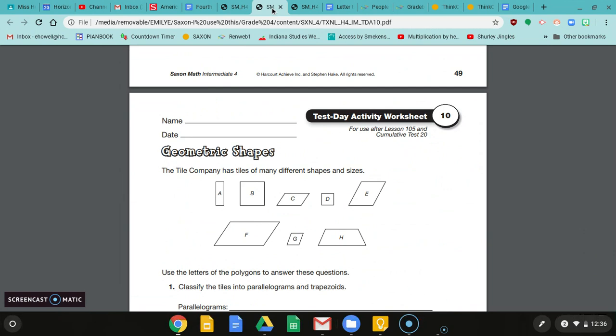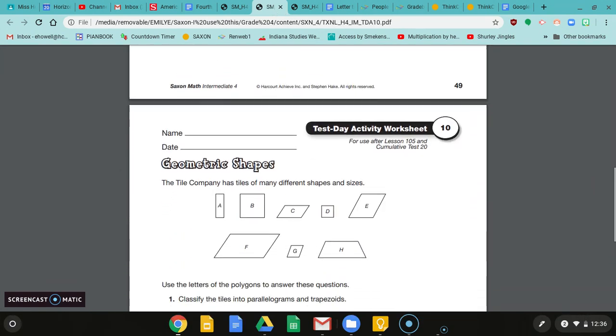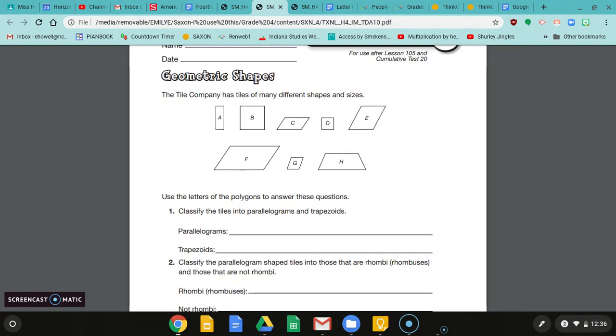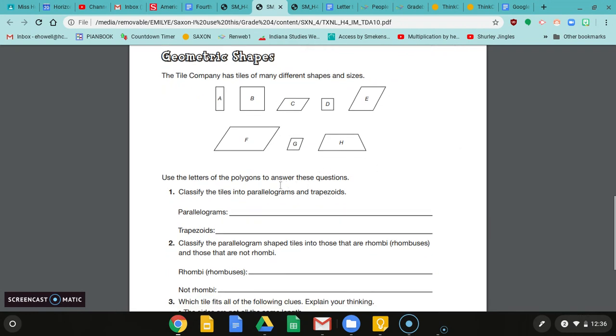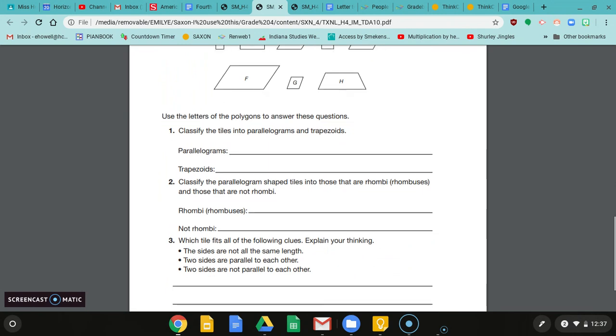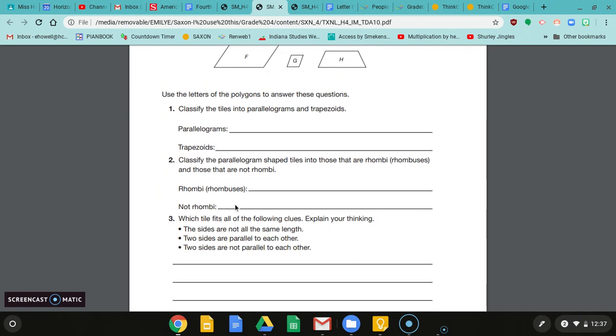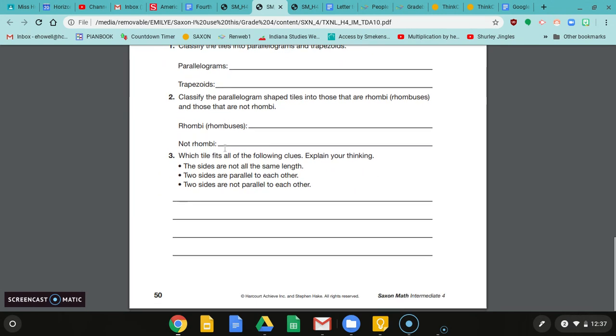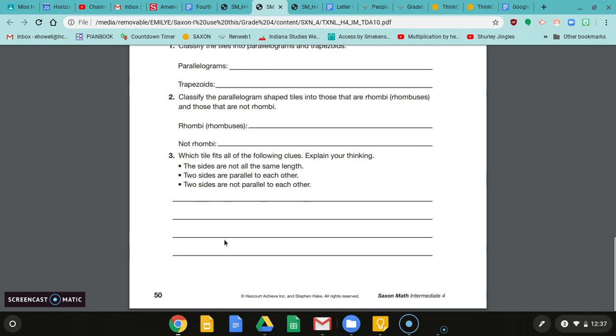And lastly, you have your test day activity 10. The directions on the first page, and then on the back it tells you that this tile company used a lot of different shapes and sizes. You're going to classify them into parallelograms and trapezoids. You are welcome to use your book to help you with this. This is not a part of the test to figure out what tiles go under which.